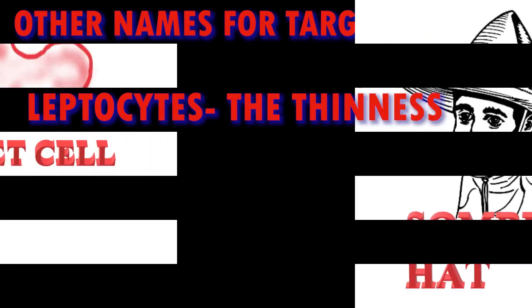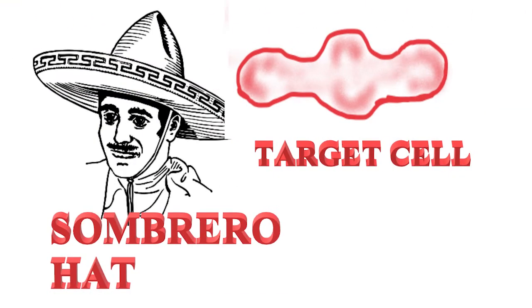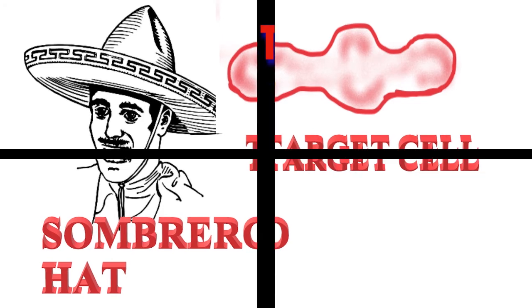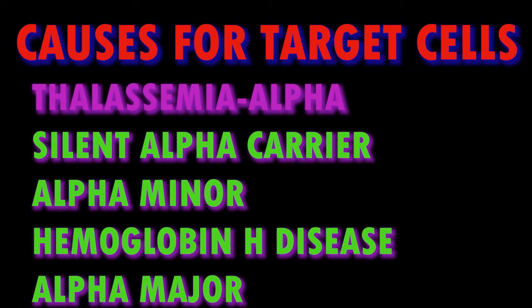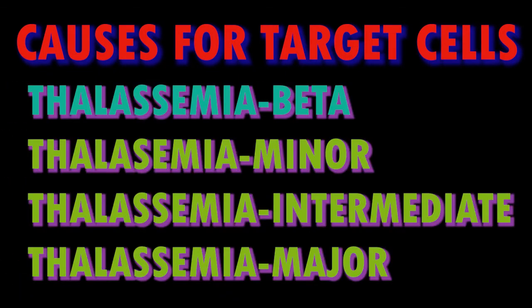Target cells are also called codocytes, as they appear like a bell in electron microscopes. Because of their thinness they are referred to as leptocytes. Because of their wavy bowl shape, they are referred to as Mexican hat cells or sombrero cells.